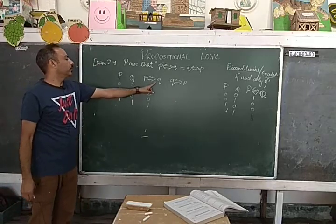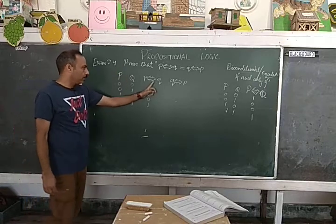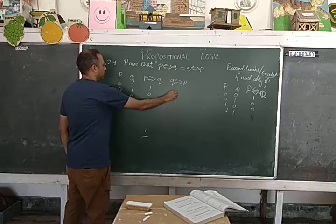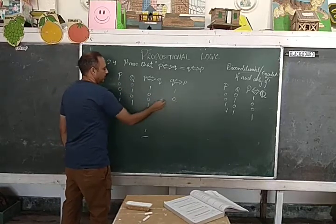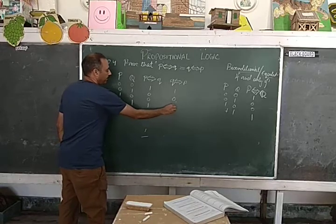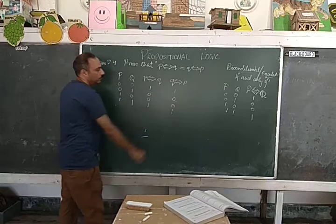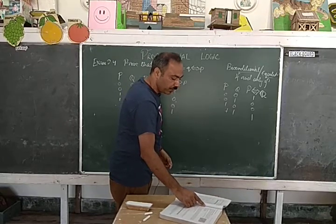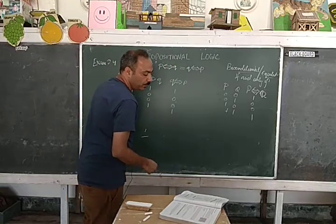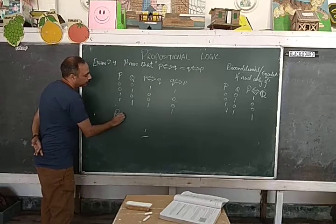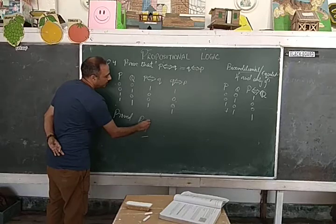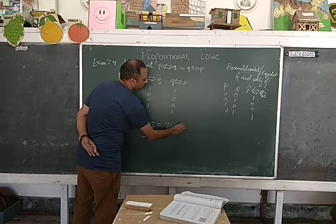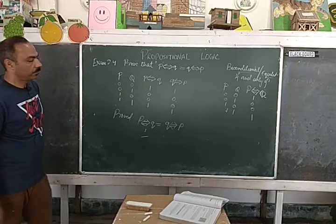Now Q equivalence P — the same rule applies: both true returns 1, only one true returns false, both false returns 1. So you can say it has been proved that P equivalence Q equals Q equivalence P.